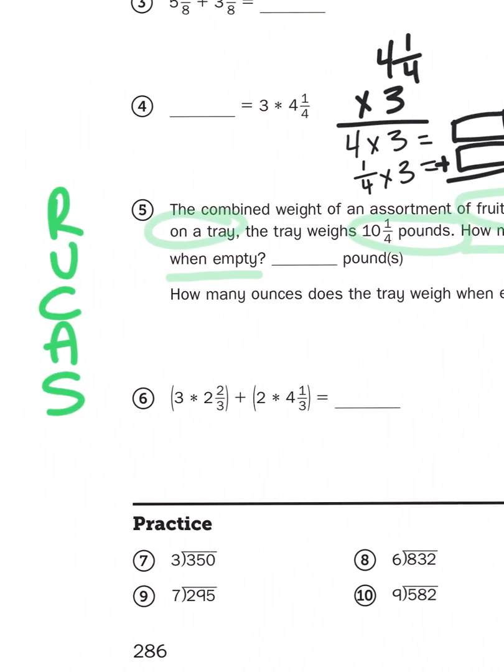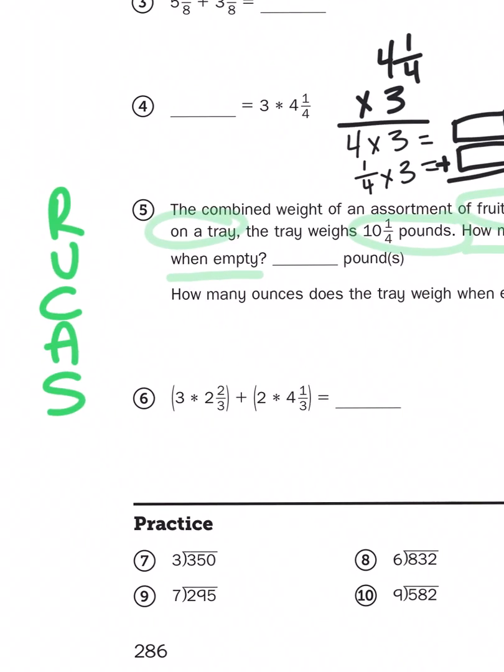Then finally, problem number six. Now this is one I'm actually going to help you with because I want to show you what this parentheses business means. You have two sets of multiplication problems inside two pairs of parentheses. And then you have an addition sign. So when we see parentheses, that's usually a clue that says we have more than one operation to deal with. Adding and subtracting, or adding and multiplying, or multiplying and dividing, or dividing and adding. Now the parentheses tell us that what's inside the parentheses has to happen first, which means there's an order to the operations that you must perform.